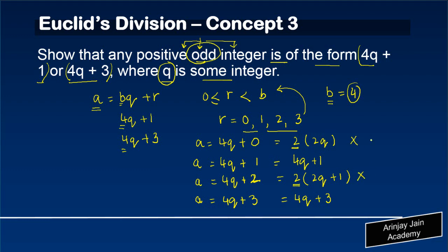So these two numbers cannot be odd, they are even. If these two are even, what we are left with is only 4q plus 1 and 4q plus 3, which means that the value of a can be 4q plus 1 or 4q plus 3, which is what we were asked to reflect.